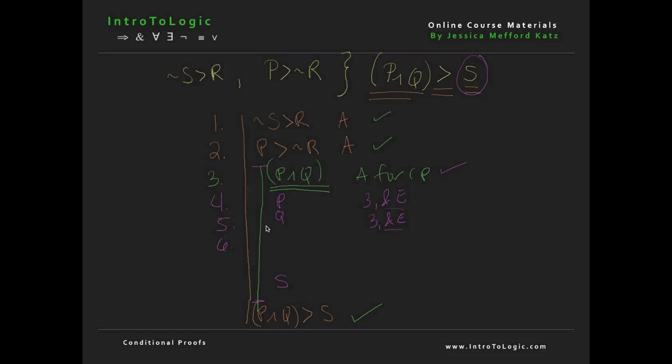Okay, so using P, we can derive not R from modus ponens, lines 2 and 4. So now I have not R. And using not R, we can derive not not S from 1, 6 modus ponens. So we have the negation of R, which is the negation of this consequent. So we get the negation of the antecedent, and we can use DN on line 7 to take away those negation signs and get S, which is the consequent of the conditional we're trying to prove. So we now have, on our 9th line, the ability to discharge lines 3 through 8 in the conditional proof, and we've derived the conditional we've wanted.